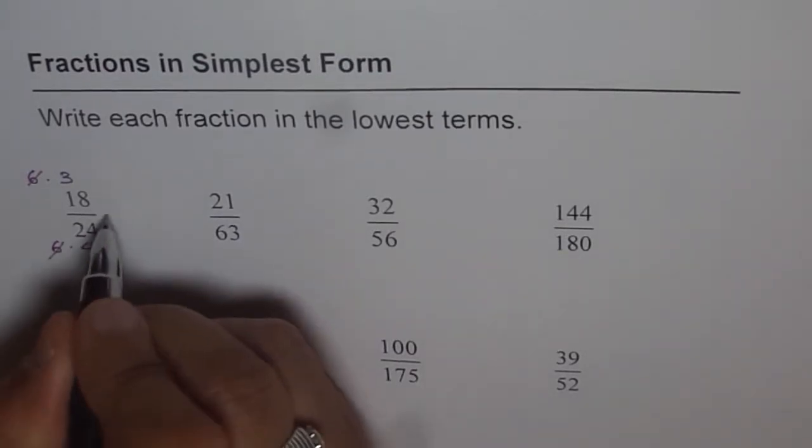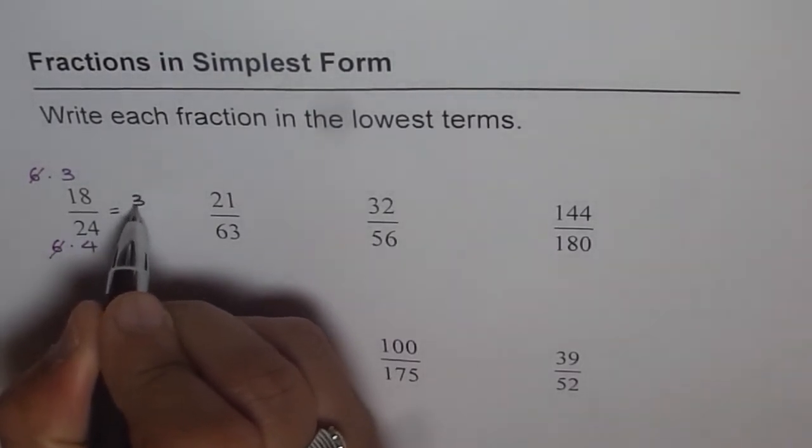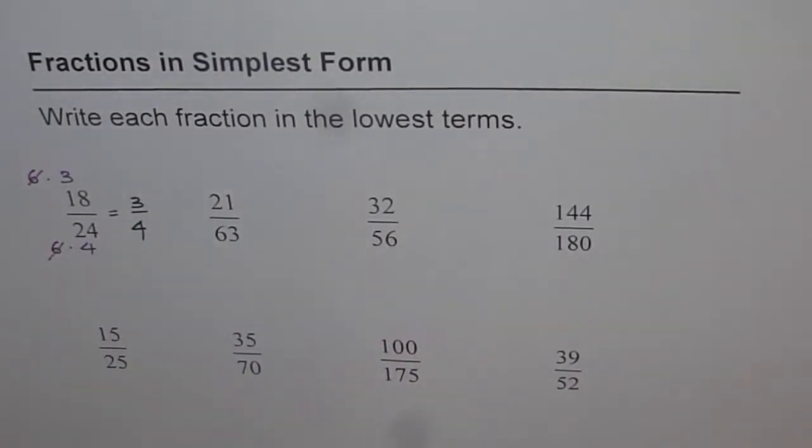So we can write this as equal to 3 over 4. Now this is one technique of simplifying or writing the fraction in the lowest terms.